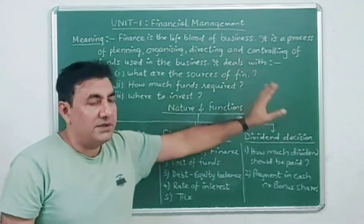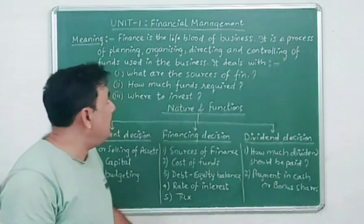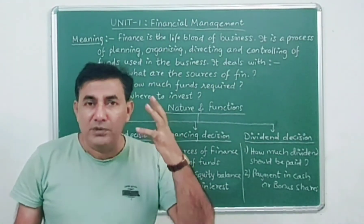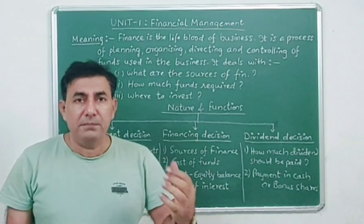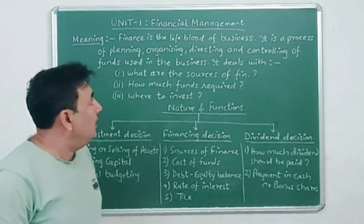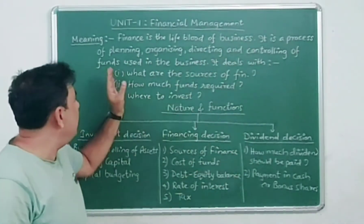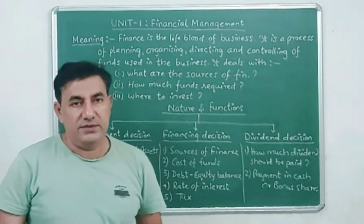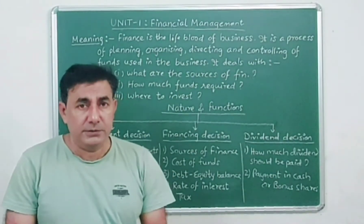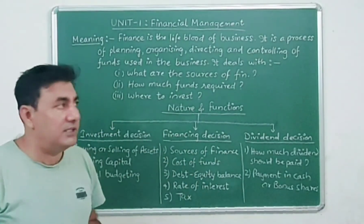Finance is the lifeblood of business. Without finance, without money, you cannot run. Financial management is a process of planning, organizing, directing, and controlling of funds used in business. These are the 4-5 functions we can do in management, and the same thing is applicable to financial management.